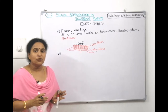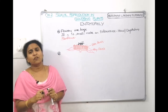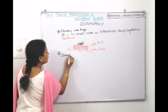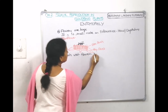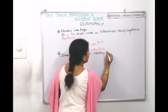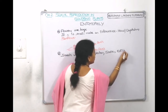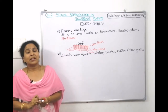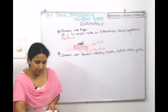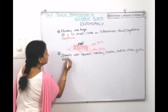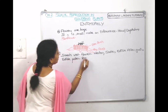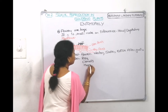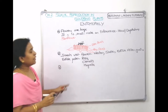Insects visit flowers for nectar, edible pollen grains, or shelter. Plants which provide edible pollen grains include Rosa indica (rose), clematis, and magnolia. The insect comes to collect these edible pollen grains.